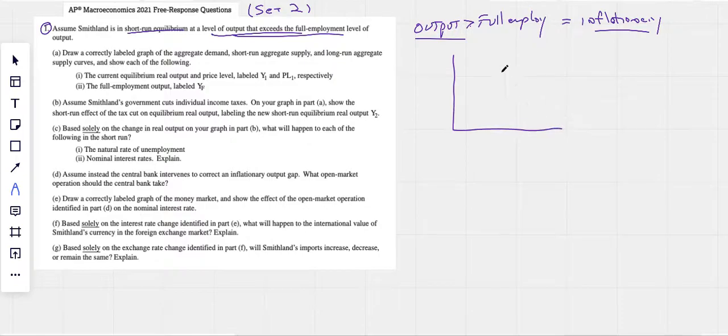But we can see output is greater than full employment. So if we're drawing our graph here, long run aggregate supply, obviously on the vertical, short run upward sloping, aggregate demand downward sloping, price level on the vertical, real GDP on the horizontal. They're saying that output is greater. So let's just put it right there. We can see that our price level is high, output is high, right? This implies that we have what we call, in that short run equilibrium right there, an inflationary gap.